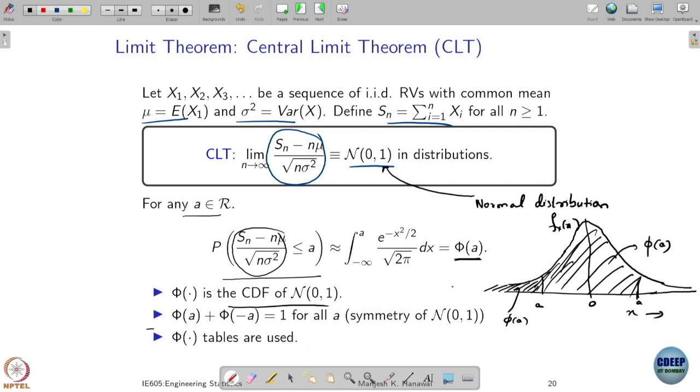Now this function phi of a has one nice property that if you are going to take a and minus a, suppose let's say this is a and this is minus a, that is symmetric around minus a. Now the claim is, if you add these two areas, phi of a and phi of minus a, that is going to be one.